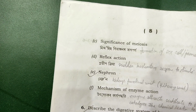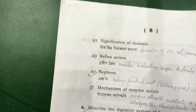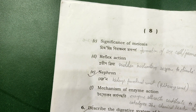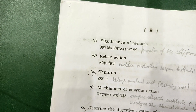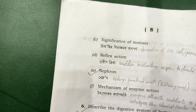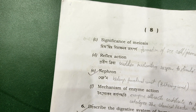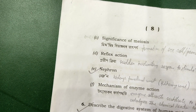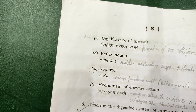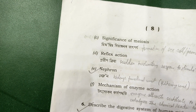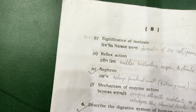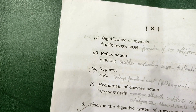Next: nephron — the nephron is the functional unit of the kidney; it performs filtration. Next: mechanism of enzyme action — the enzyme acts on a substrate and catalyses the chemical reaction.